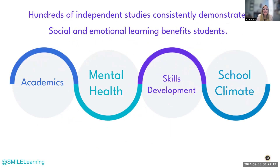There have been hundreds of independent studies that have looked at the importance of social-emotional learning and how it benefits our students. There are four core areas where it can be very effective: academics, mental health, development of skills, and it can also help with our school climate.